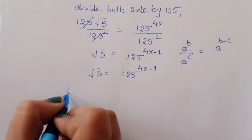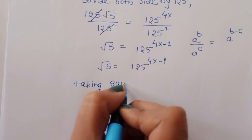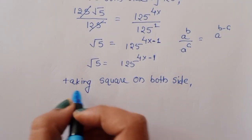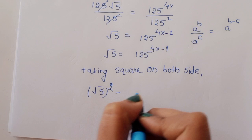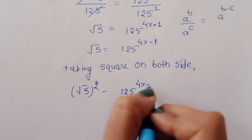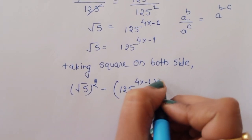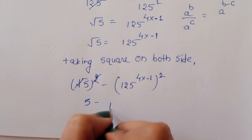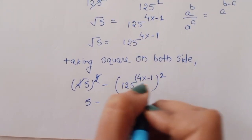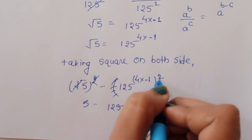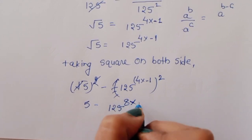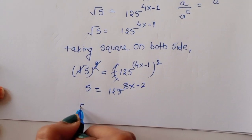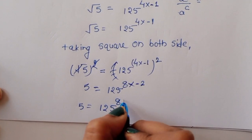Now taking square again on both sides, we will get square root of 5 squared equal to 125 raised to 4x minus 1 squared. This will cancel here, giving 5 equal to 125 raised to 8x minus 2.